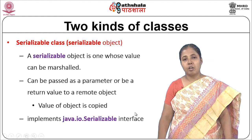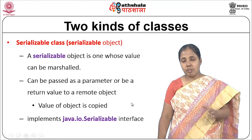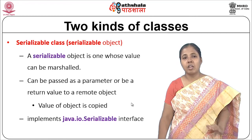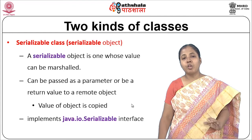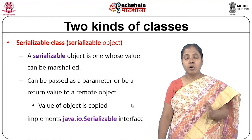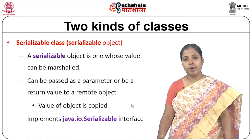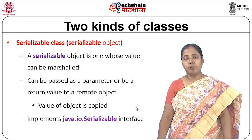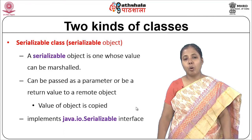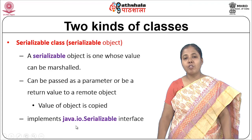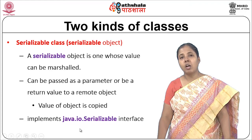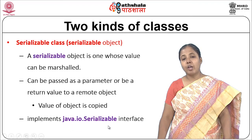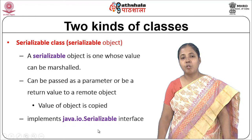There is another class called the Serializable class. Serializable is actually an interface, and the class which implements the Serializable interface becomes a serializable class. A serializable object is one whose value can be marshalled — sent as byte streams from one end to the other. It can be passed as a parameter or be a return value to a remote object. The value of the object would be copied, and the class implements the Serializable interface available in the java.io package. You need to import java.io to make use of the Serializable interface.